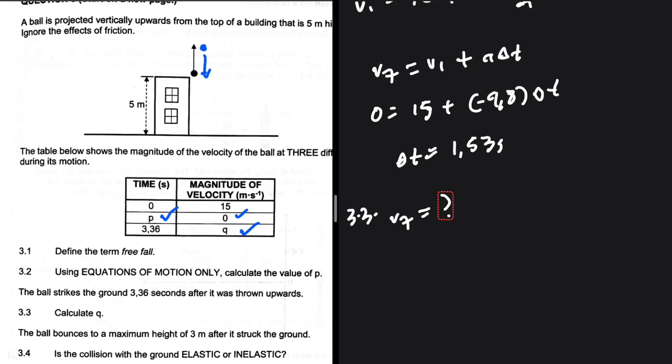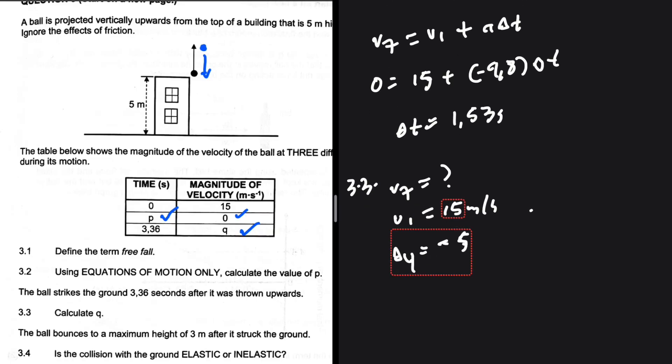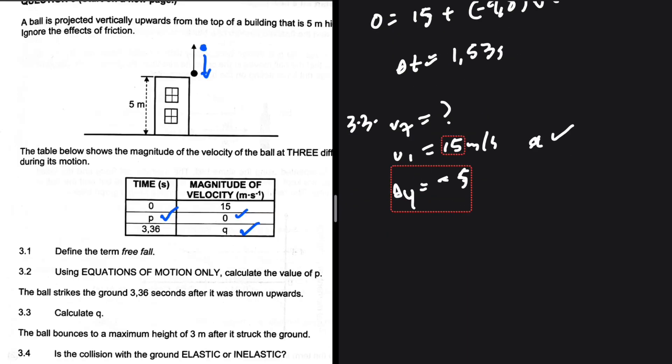Now we need to decide which part of the motion we're considering. We don't have the height above the ground, but we have the height of the building. So it makes sense for us to use the height of the building. If we're using the height of the building, vi is 15 meters per second upwards, and then delta y will be minus 5. We're looking for the time it strikes the ground. We have the acceleration, obviously, 9.8 meters per second squared.